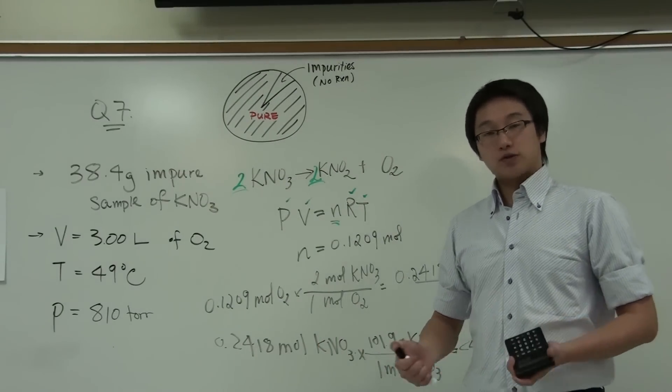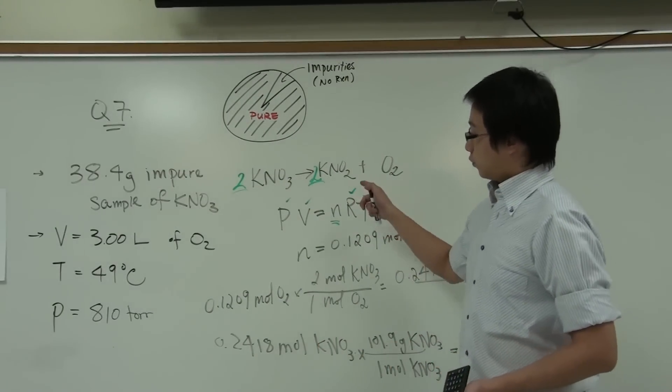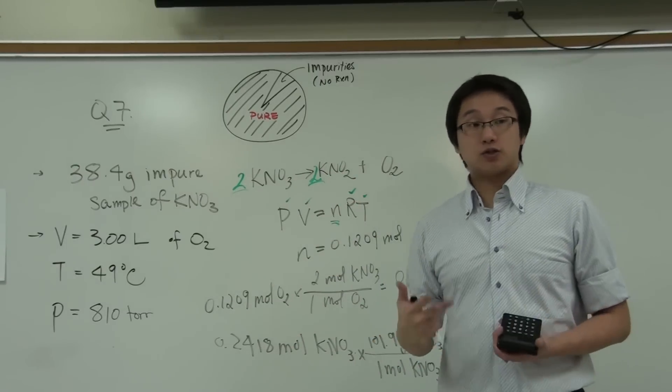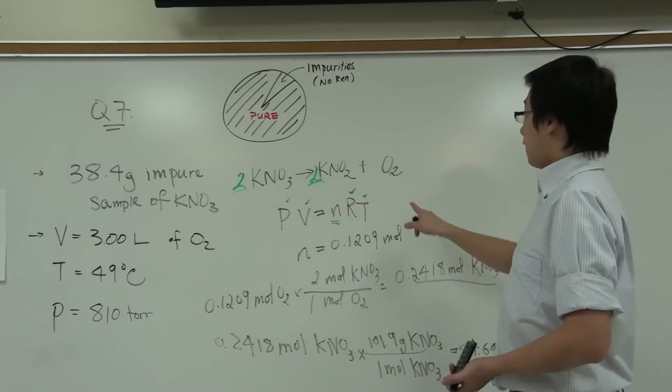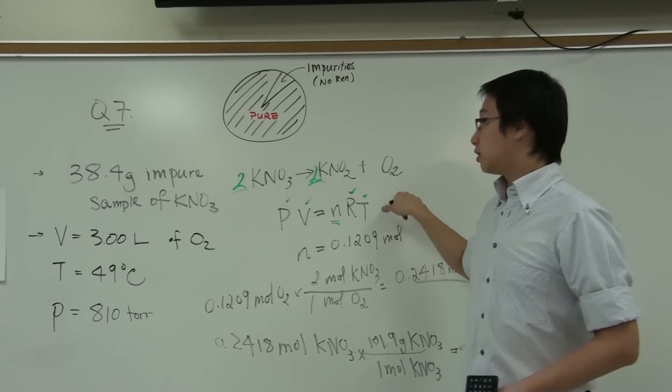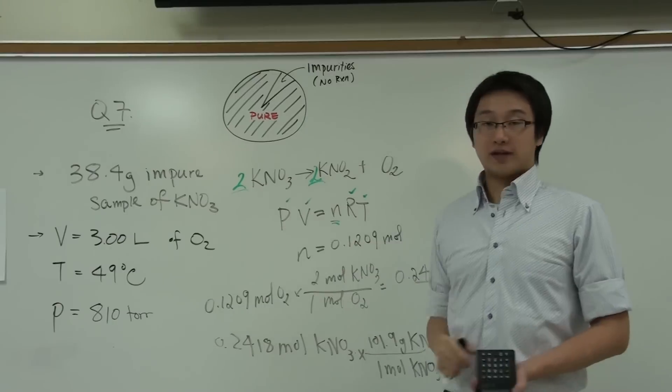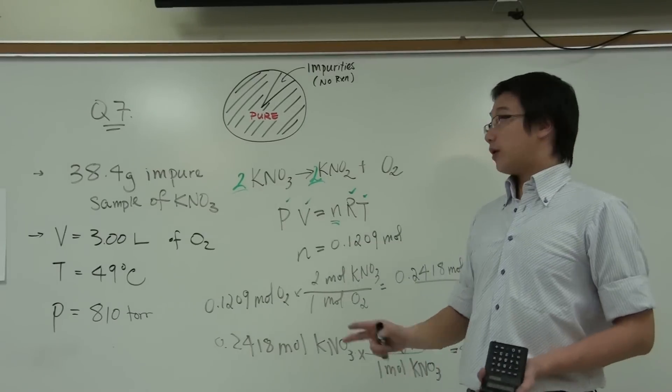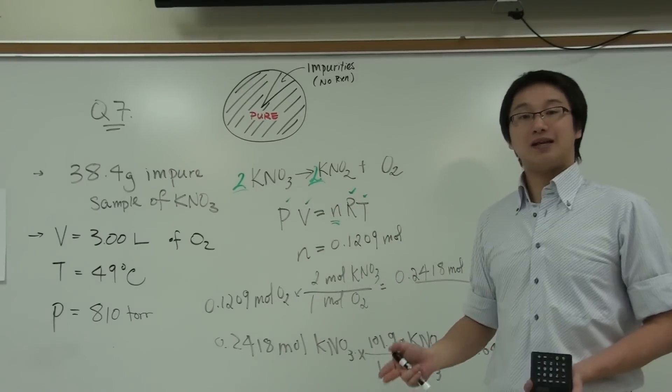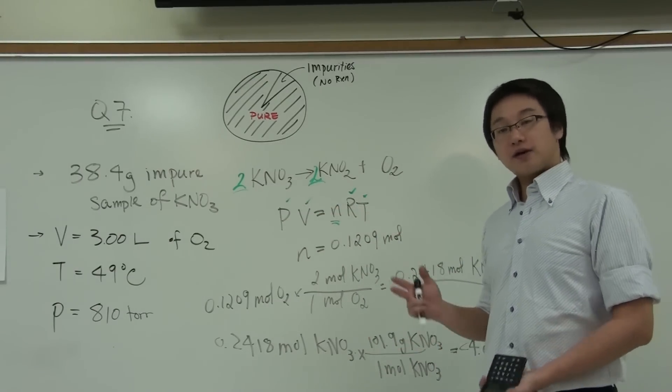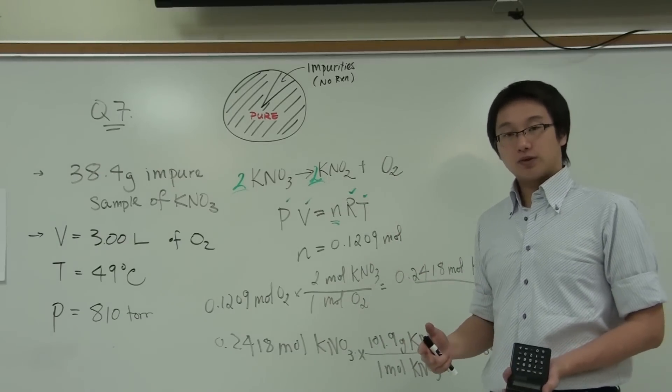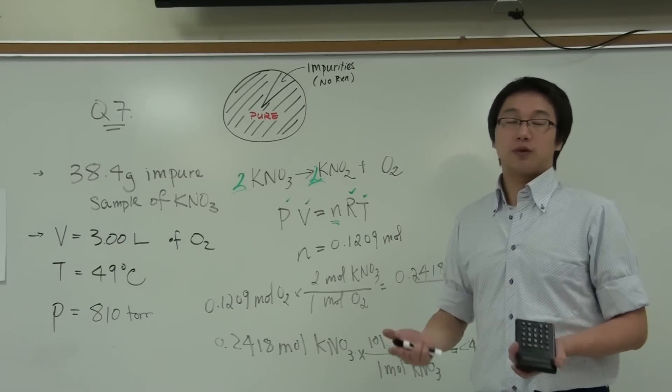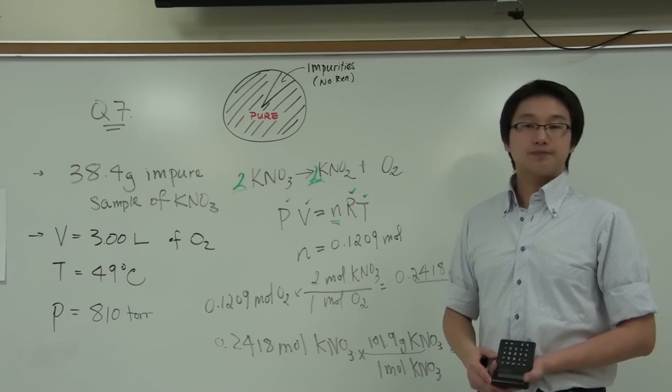Now, one thing to stress is that the reason why we can do this is because the question tells you we are assuming all of the oxygen is produced by the potassium nitrate. And we have 100% yield of the product. If it is not 100%, then we will have to take that into account, which will not be discussed in this problem.